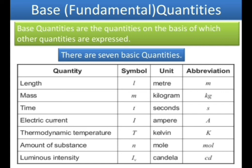The seven basic quantities are: first, length — unit meter, symbol m; second, mass — measured in kg; third, time — measured in second; fourth, electric current — measured in ampere; fifth, thermodynamic temperature — measured in Kelvin; sixth, amount of substance — measured in mole; and seventh, luminous intensity — measured in candela. In this class, we are only focusing on length, mass, time, and temperature. Electric current, amount of substance, and luminous intensity will be studied in higher classes.